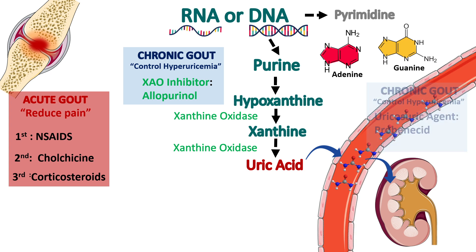The second class to treat chronic gout are uricosuric agents — drugs which increase the excretion of uric acid via the kidney. For example, probenecid.